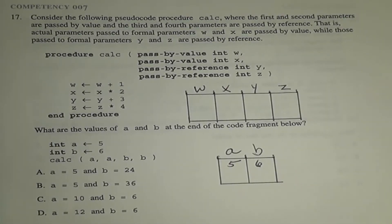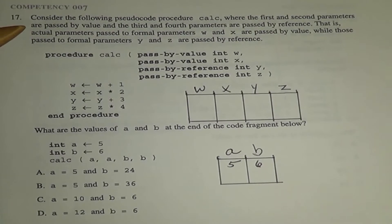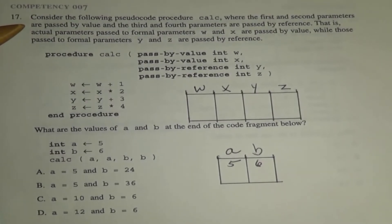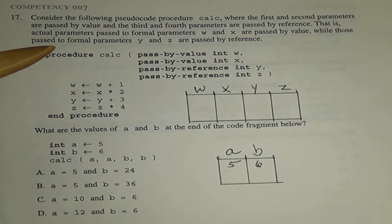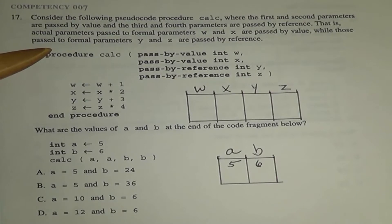Let's take a look at problem number 17 from the TEA practice test for computer science certification. It says we're going to consider the following pseudocode procedure calc, where the first and second parameters are passed by value, and the third and fourth parameters are passed by reference. That is, actual parameters passed to formal parameters W and X are passed by value, while those passed to formal parameters Y and Z are passed by reference.